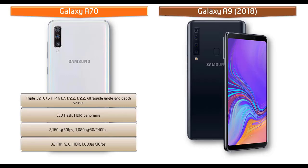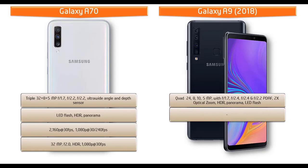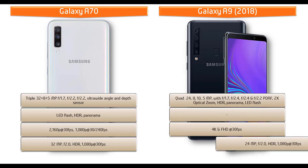Moving on to Galaxy A9, it features the world's first quad smartphone camera to capture life the way it was meant to be seen. Its intelligent camera system gives you 4 times the functionality for whatever the occasion. This phone comes with quad 24, 8, 10, and 5 megapixel primary cameras with f/1.7, f/2.4, f/2.4, and f/2.2 apertures respectively — ultra-wide, telephoto, main, and depth cameras. You can also find PDAF, 2x optical zoom, panorama mode, HDR, and LED flash. It shoots 4K and full HD videos at 30 fps. The Galaxy A9 is also equipped with a 24 megapixel front camera with f/2.0 aperture for selfies, with HDR and 1080p recording at 30 fps.